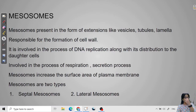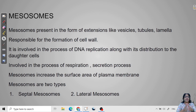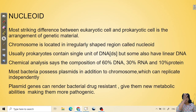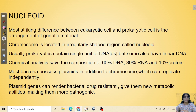Mesosomes are extensions of the plasma membrane. They form either vesicles or tubules and play a major role in cell wall formation. They are also involved in respiration and secretion, and increase plasma membrane surface area. There are two types: septal mesosomes and lateral mesosomes. Regarding the nucleoid — there is no particular nucleus in prokaryotic cells, so the DNA is present in the form of one chromosome in the nucleoid region.